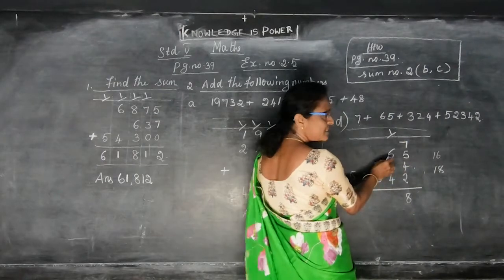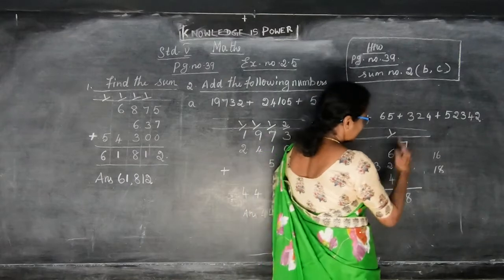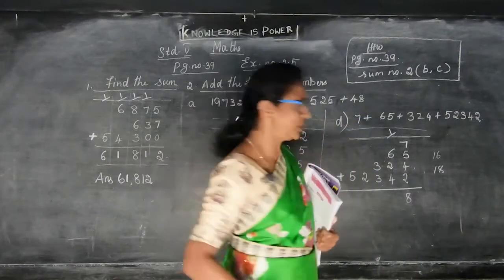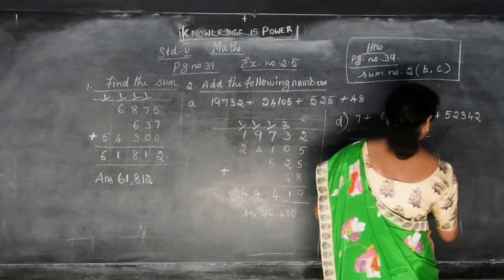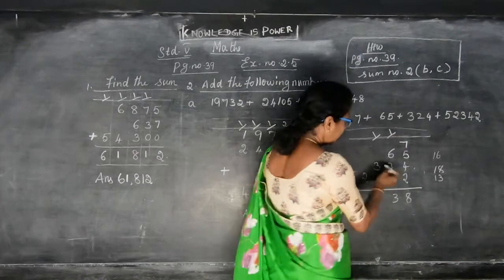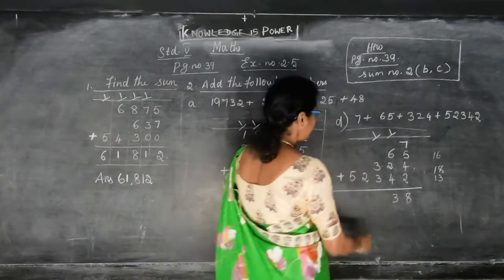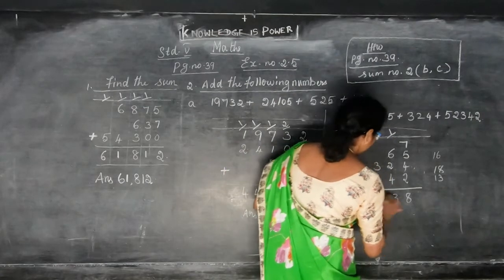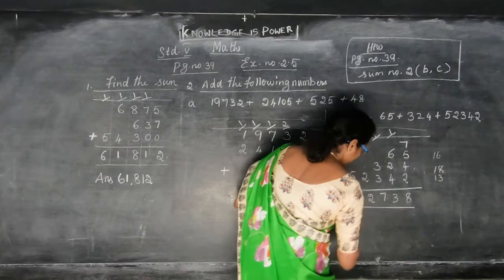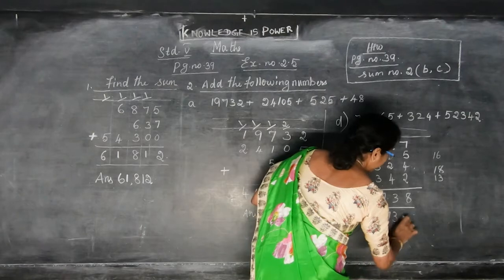1 in the mind, 6 in the fingers — that gives you 7. 7 in the mind, 2 in the fingers — that gives you 9. 9 in the mind, 4 in the fingers — gives you 13. So put 3 and carry 1 over. 1 in the mind, 3 in the fingers — 3 plus 1 is 4. 4 plus 3 is 7. Here there is no number, so just put 2 and 5. The answer is 52,738.